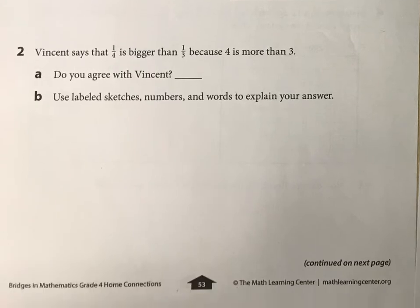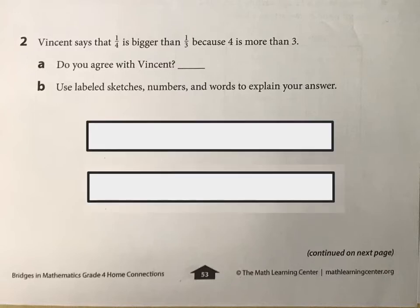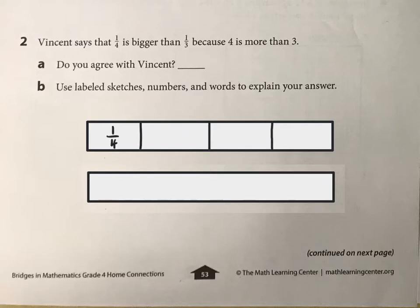And then there's Vincent. Vincent says one-fourth is bigger than one-third because four is more than three. Do you agree with Vincent? Maybe the best way to figure this out is to draw two equal long rectangles — cut one into one-fourth, cut the other into one-third, and see which one's bigger to determine if Vincent is correct.